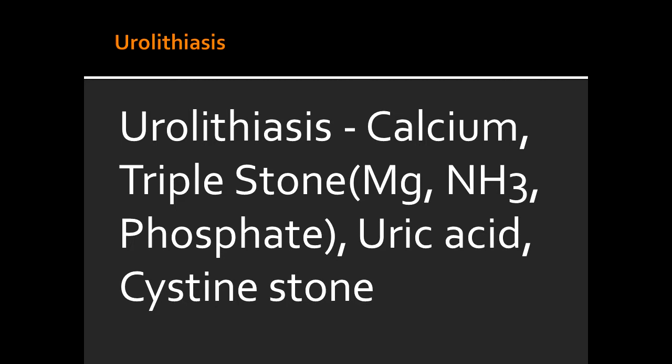What causes the formation of the magnesium ammonium phosphate stone, also known as the struvite stone? The formation of this stone occurs due to urinary tract infections caused by Proteus, which can lead to the formation of staghorn calculi.